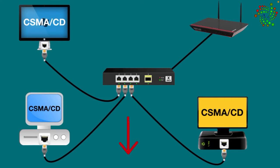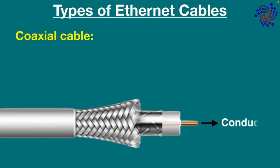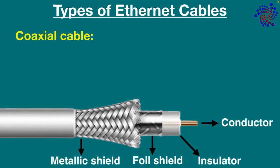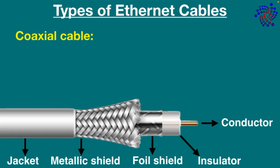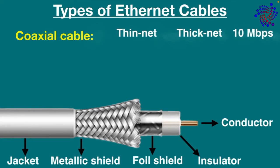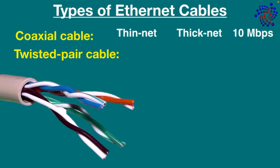Now let's talk about the types of Ethernet cables. Coaxial cable has an inner conductor in the middle of the cable which is used for the transmission of signals. The conductor is enclosed by an insulator, which is then surrounded by a foil shield and then a metallic shield to protect from electromagnetic interference. Finally, there is an outer jacket used to protect the internal layers from damage. This type of cabling comes in two types: thinnet and thicknet, both with maximum transmission speeds of 10 megabits per second.